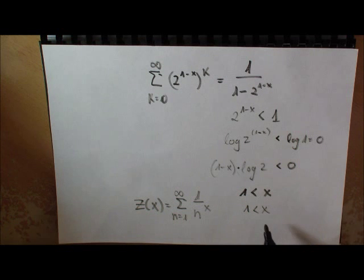I write it down: sum from 1 to infinity of 1 over n to the x converges for all x that are greater than 1. If you remember the case x equals 1, you get the harmonic series, which is not converging but diverging, so this seems to be true.